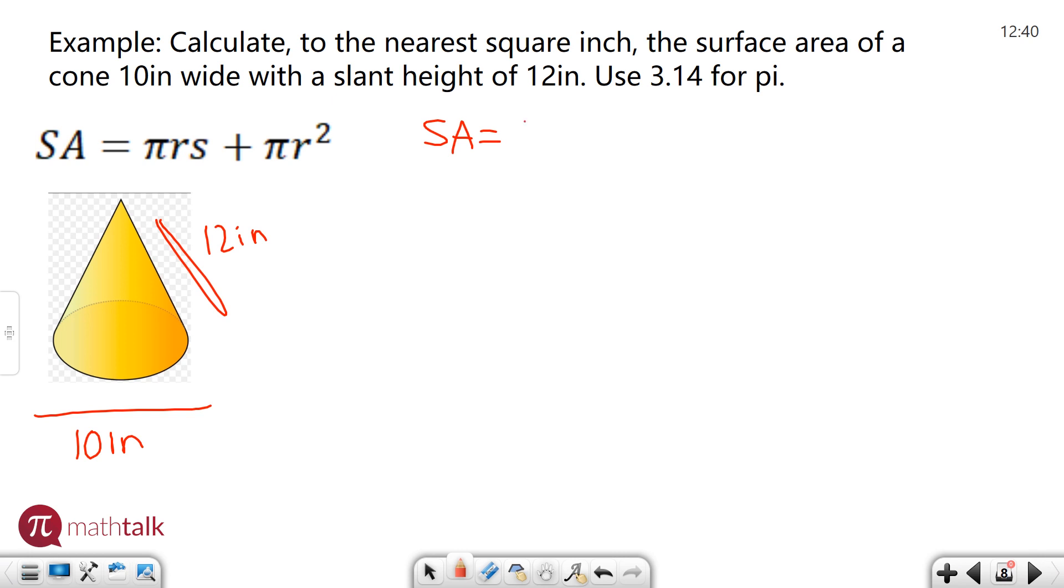So our surface area is pi, which is 3.14, times the radius. So they tell you the entire cone is 10 inches wide, which means the diameter is 10. And the radius is half of your diameter. So that means our radius is 5, and the slant height is 12, plus pi r squared, 3.14, times r squared. R is 5.